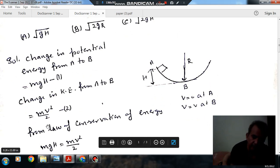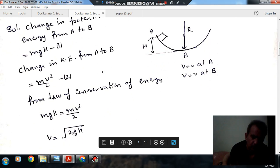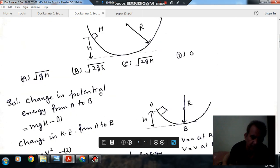So equating these two, we can get V as root 2GH. So answer is option C.